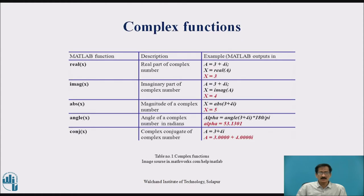These are some complex functions. The real part of a complex number: A is equal to 3 plus 4j, x is equal to real(A), will give the result x equals 3. The imaginary part of a complex number: A is equal to 3 plus 4j, x is equal to imag(A), will give the result x equals 4.